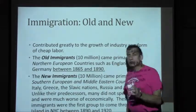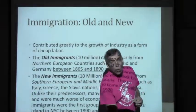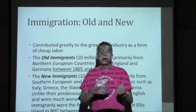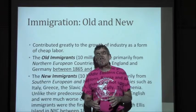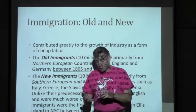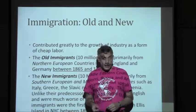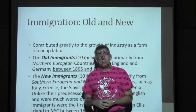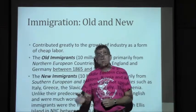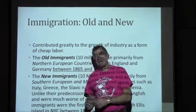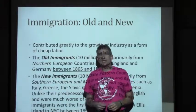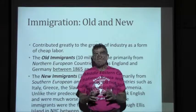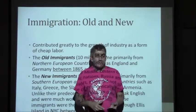In American history there's a term called the old immigration and the new immigration. The old immigrants came prior to 1890, primarily from Northern and Western Europe — England, Ireland, and the like. The new immigrants came after 1890 from Southern and Eastern Europe — the countries bordering Russia, Italy, and the Slavic nations, for example. The fundamental difference is that the first group were largely English-speaking immigrants, while the second group were not.